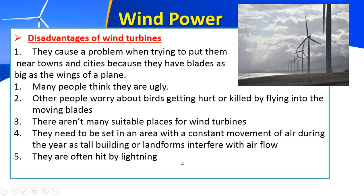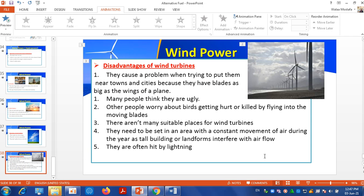And finally, wind turbines are often hit by lightning because they are made of metal and placed in an empty area. Well, that was the end of our curriculum. Hopefully you got useful information from what we have studied. Let's start the revision. You can print it and we will set sessions to answer the revision sheet together. Thank you very much and enjoy your day. Bye-bye.